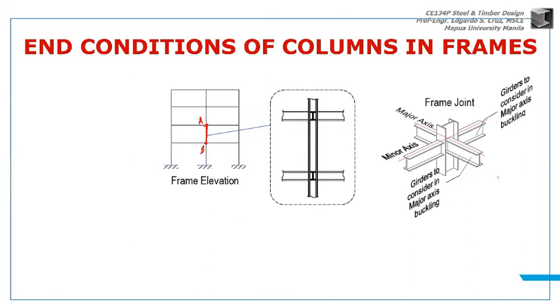So how do you determine the effective length factor of column AB? The code says, when your column is part of a frame...